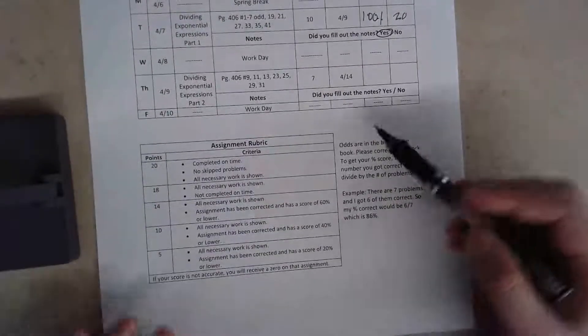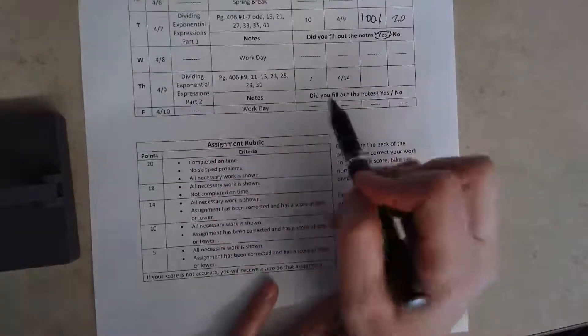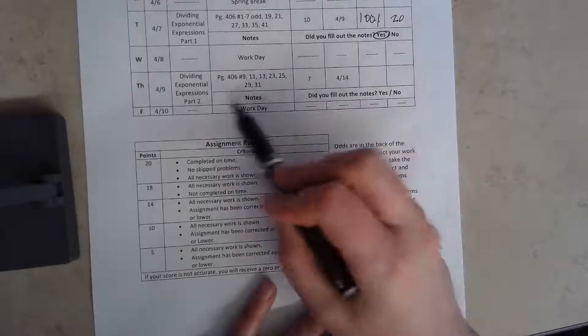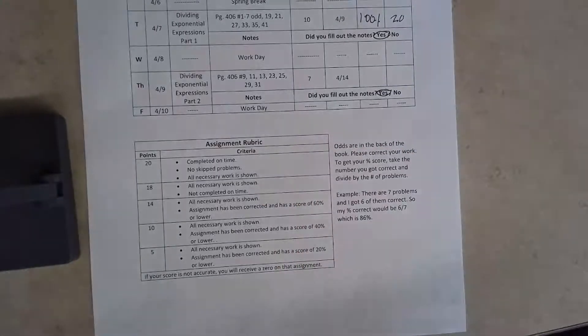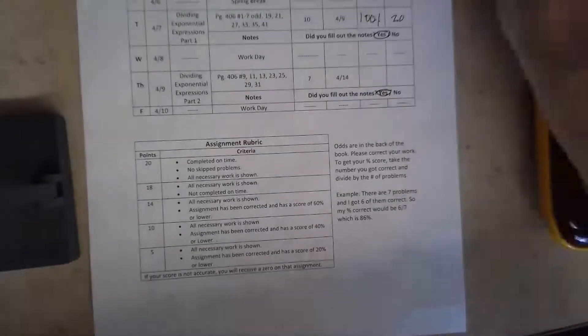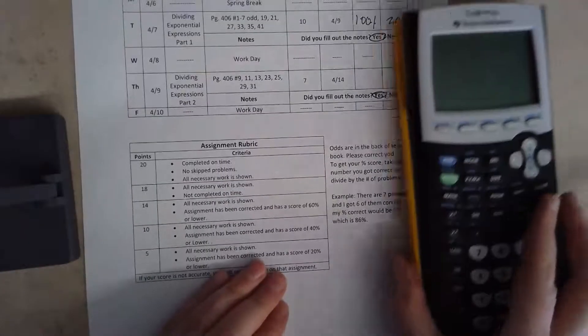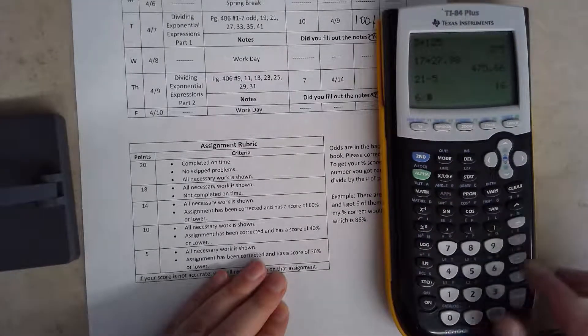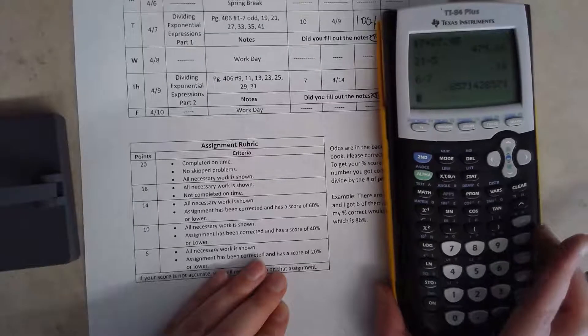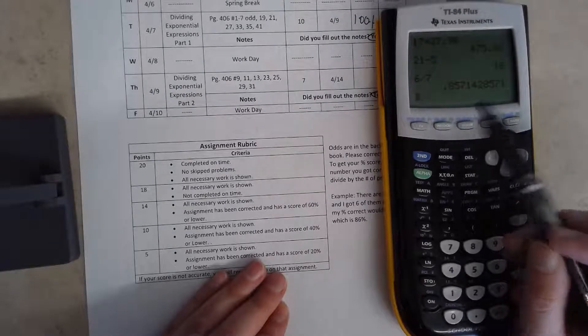Okay, so then I come, I get online on Thursday, I fill out my dividing exponential expressions part two, I fill out my notes, and then I have these seven problems. So let's say I do those seven problems, I get to the back of my book, I check it, but I missed one. I get six out of seven. So then what I'm going to do for my score is I'm going to go six divided by seven, so I got an eighty. And if you notice, 80.857, I'm going to round that to eighty six, so that's an eighty six percent.